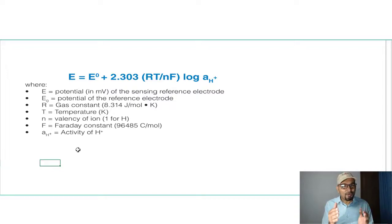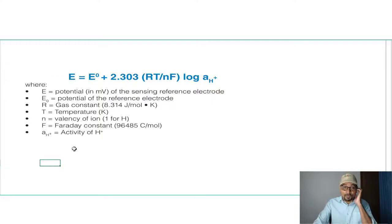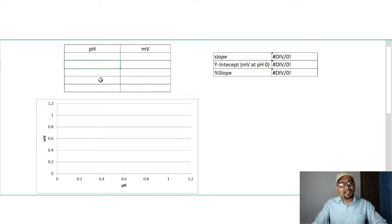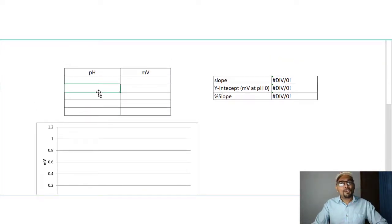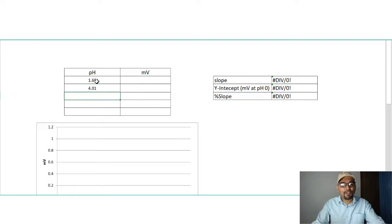With this equation, we can determine what the ideal millivolt potential should be for a given pH value. For the pH calibration procedure, I am going to select five different standard buffers: 1.68, 4.01, 7.00, 10.01, and 12.45. These are the general buffers you can select during pH calibration.